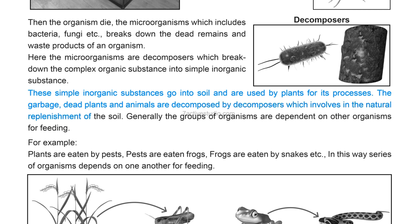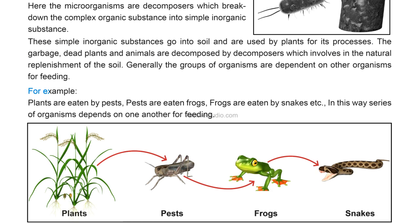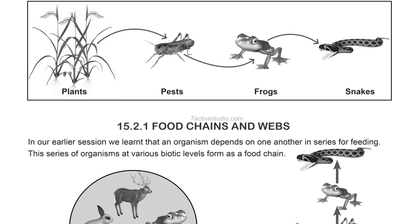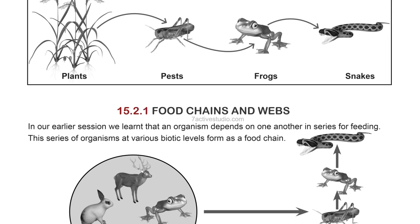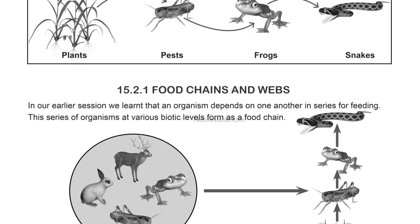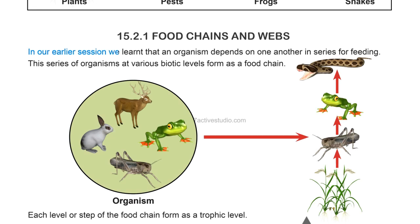Decomposers are involved in the natural replenishment of the soil. Generally, groups of organisms are dependent on other organisms for feeding. For example, plants are eaten by pests, pests are eaten by frogs, frogs are eaten by snakes, and so on. This series of organisms depending on one another for feeding is the basis of section 15.2.1: food chains and webs. An organism depends on others in series, and this series at various biotic levels forms a food chain.